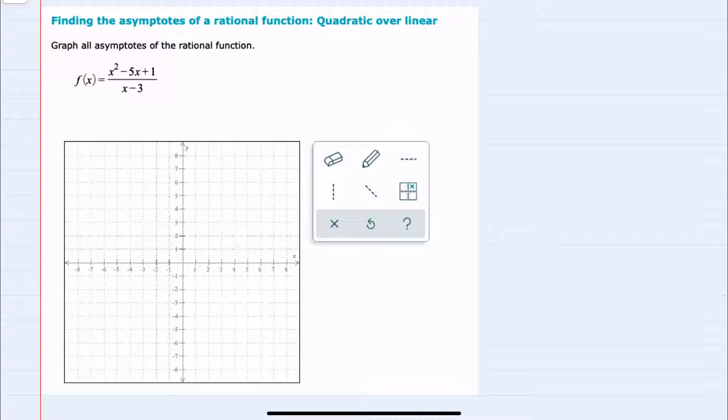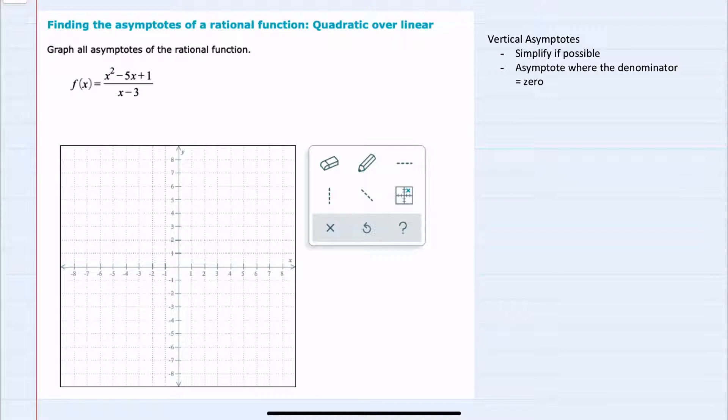Here we have the function f of x, and to start I'll look to see if there are any vertical asymptotes. We should recall that to find a vertical asymptote we should first simplify if possible. In this example I could try to factor that numerator and see if any of those factors cancel with the denominator.